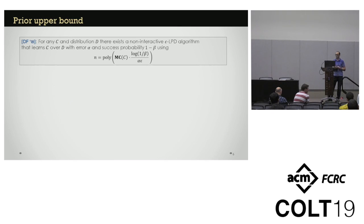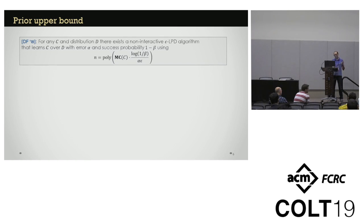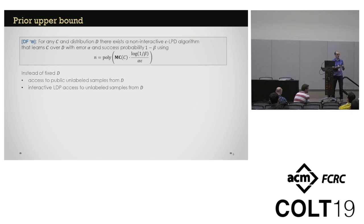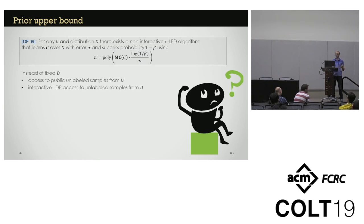On the positive side, we have also shown an algorithm which does learn all linear classifiers with sufficiently large margin using a polynomial number of samples. But this algorithm requires knowing the distribution, so it's not a distribution-independent algorithm. You can replace the knowledge of the distribution by access to public unlabeled samples or something else, but we don't have an algorithm which is fully non-interactive and learns classifiers with large margin. That's the open problem — let me know if you have any questions.